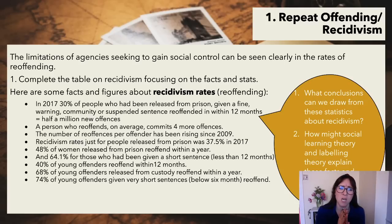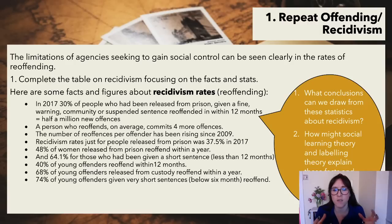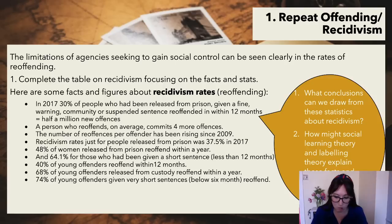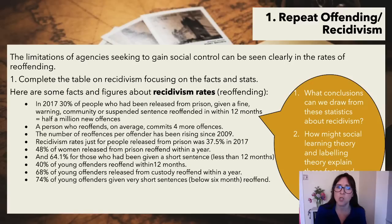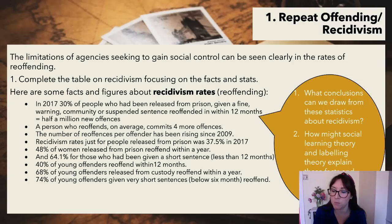What I get students to do is draw conclusions from these statistics — what do they imply about the agencies and what they are doing to help social control? Clearly social control is not working if there's so much re-offending going on. If you re-offend, if you are committing crimes, that means there's a lack of social control. What are the problems with the agencies, and how might social learning theory and labelling explain these facts and figures? That's a synoptic link from Unit 2.